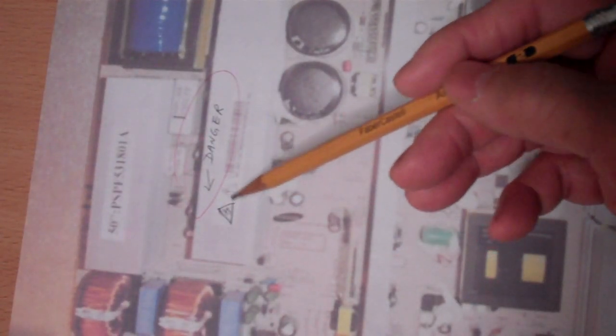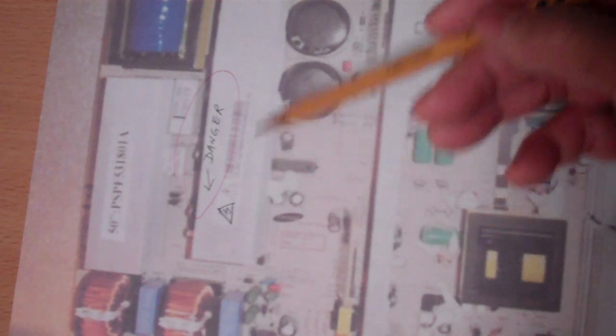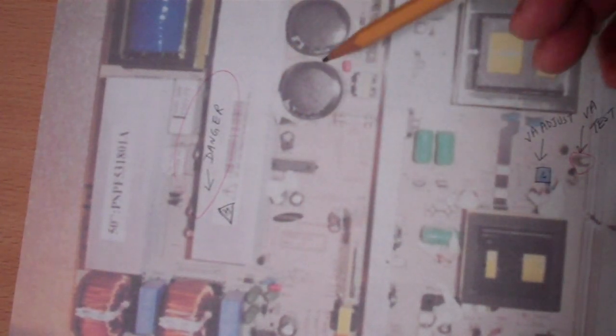You have to be careful when you open up your television. When you see the triangle with the lightning sign, that means you have high voltage here. The other parts are dangerous too, but this part is particularly dangerous with the big caps here and the heat sinks. You have to be extra careful and don't touch it.